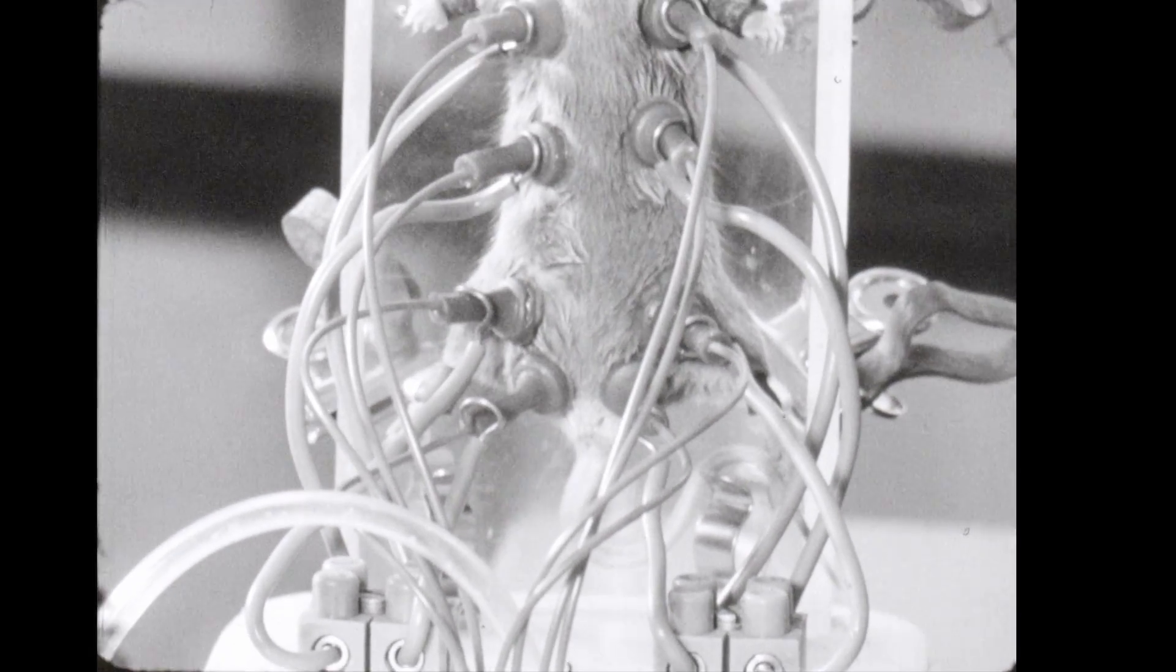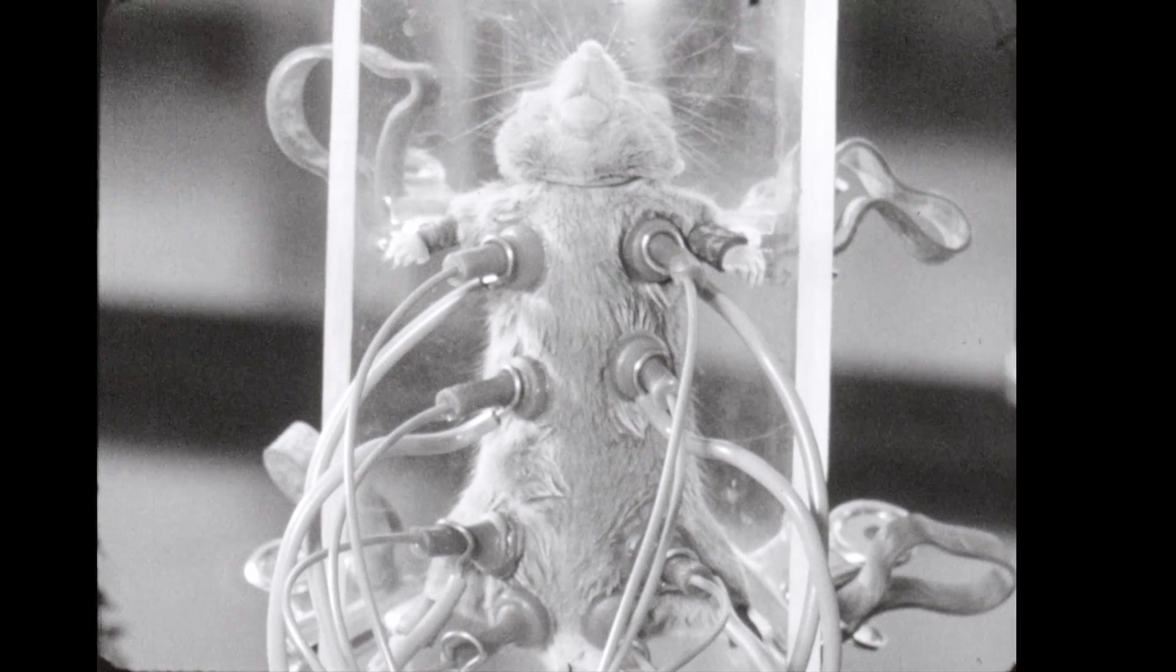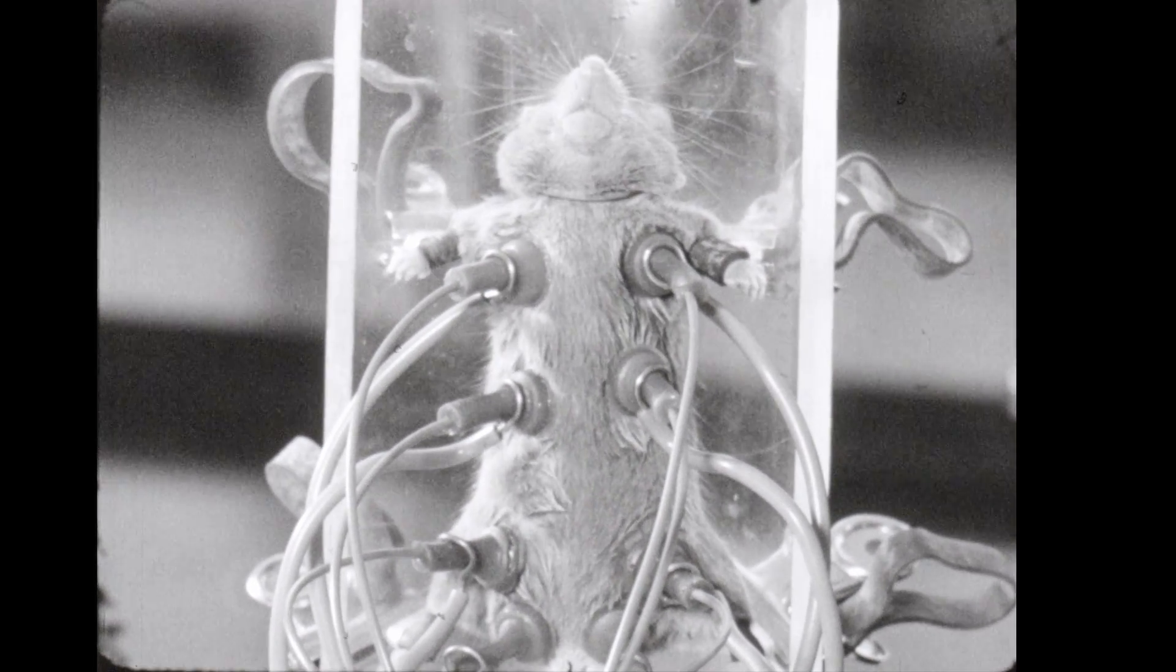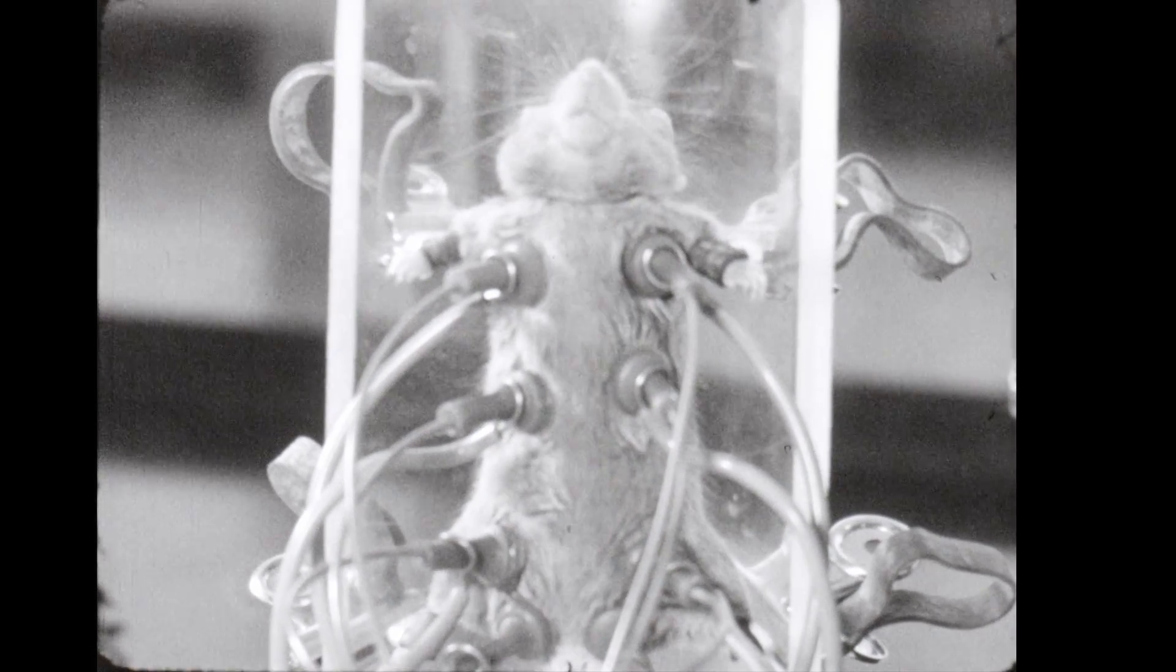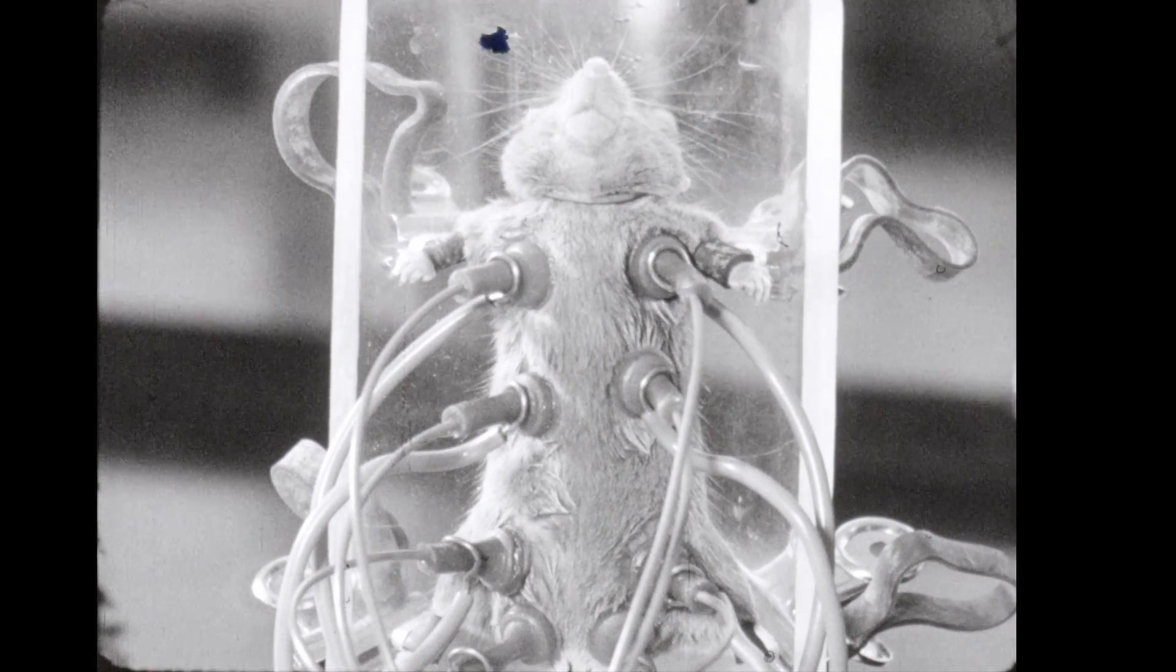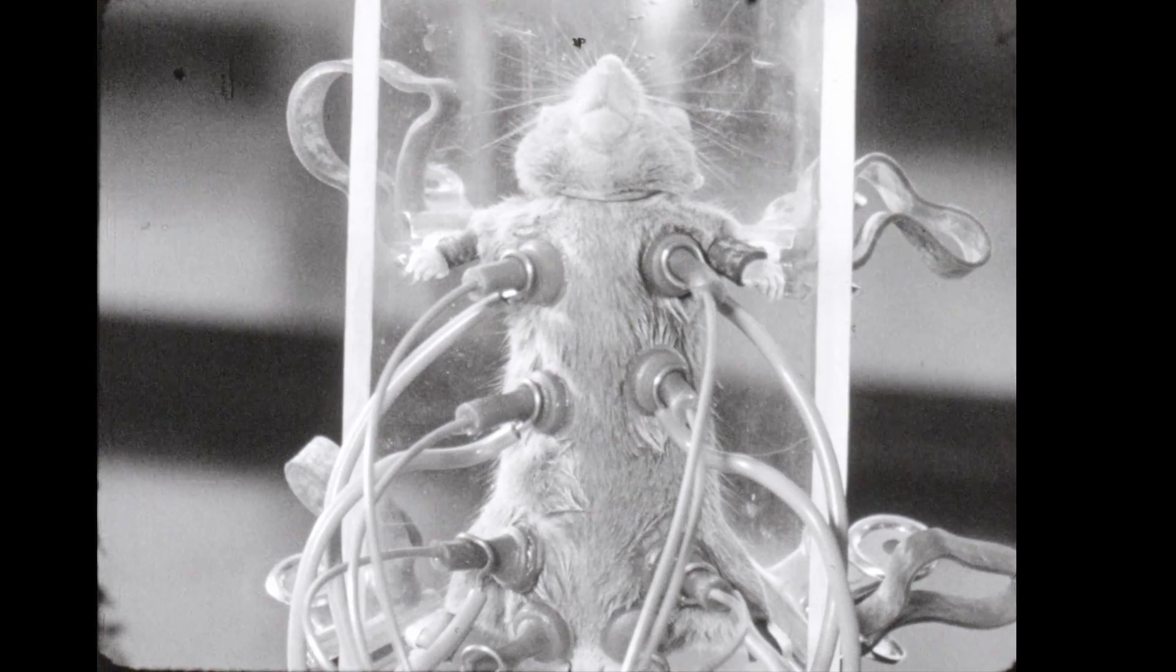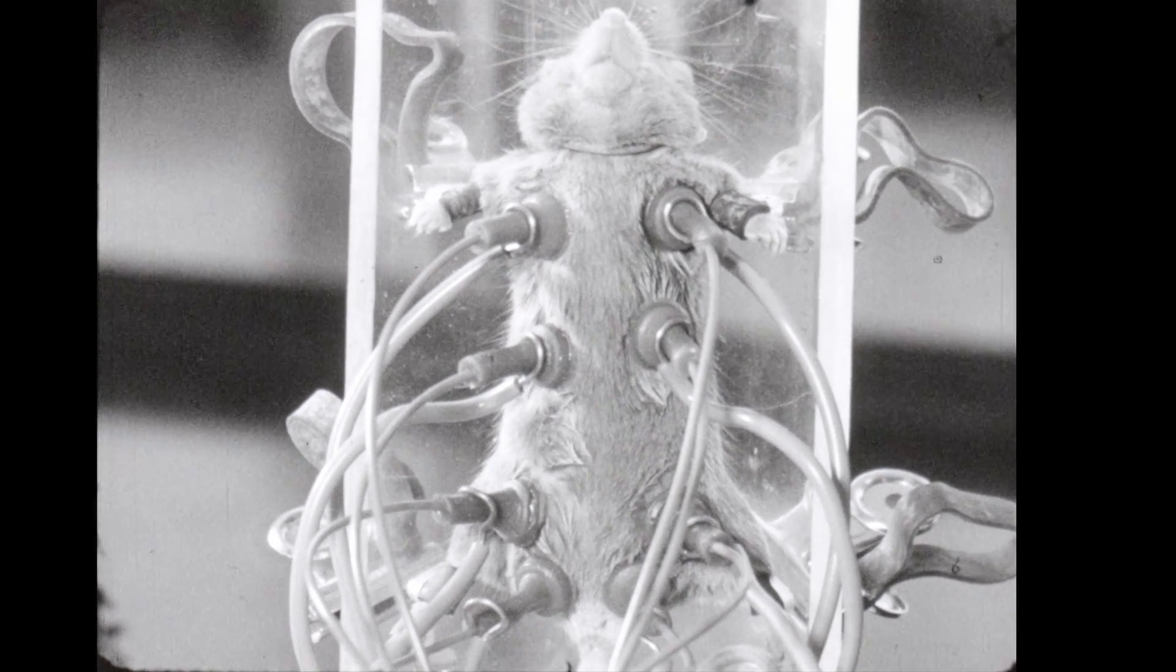Although a mouse has ten teats, the milking machine has only eight teat cups. The teats are often too close together to apply ten teat cups at the same time. Different milking out times enable cups to be transferred to unmilked teats.